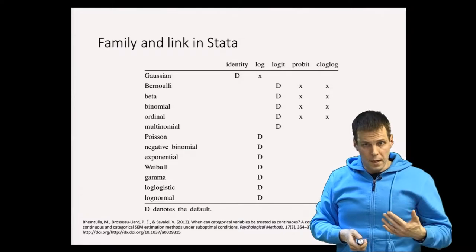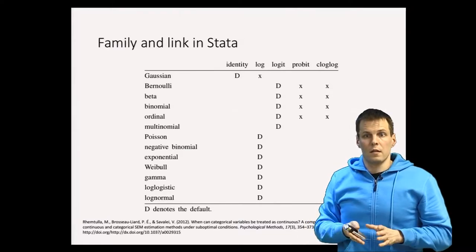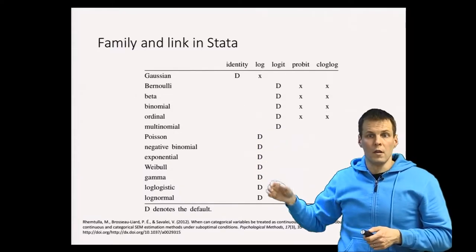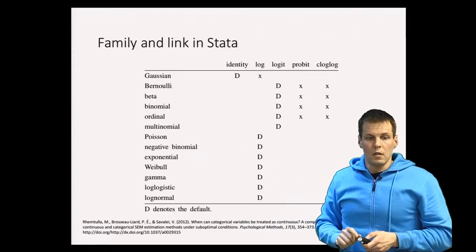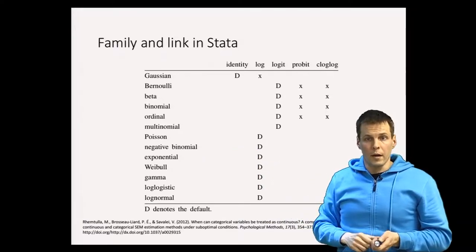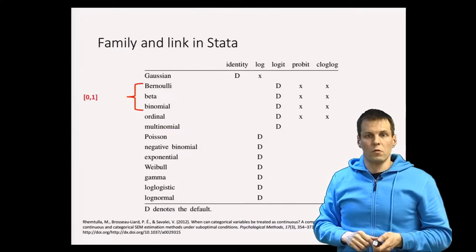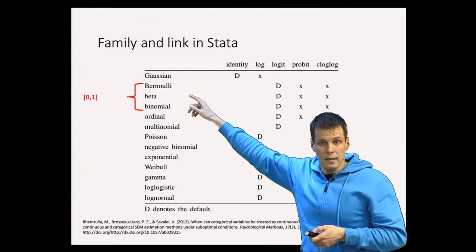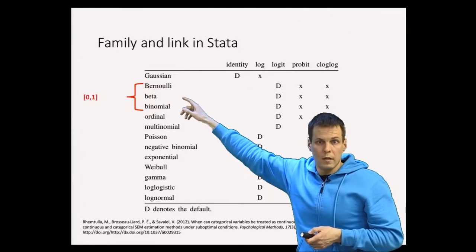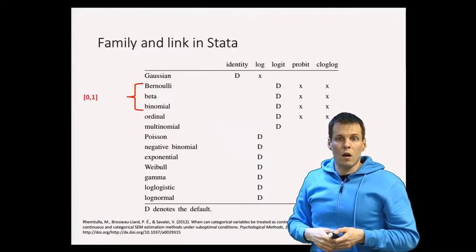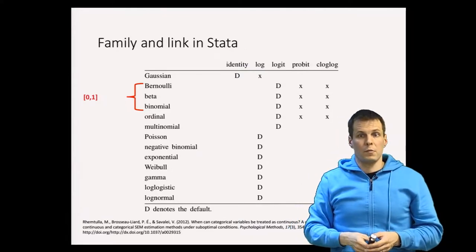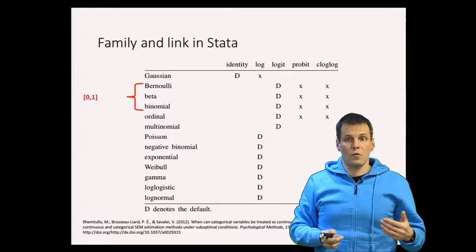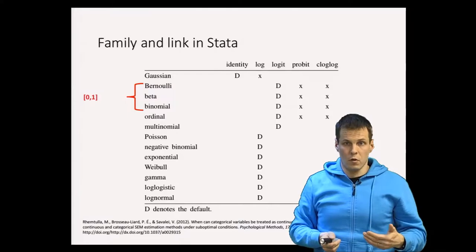A choice between 15 distributions is large, but these fall into categories. Bernoulli, Beta, and Binomial are for data that are ones, zeros, or between zero and one. Bernoulli is ones and zeros only. Beta is for values strictly between zero and one — fractions, such as what share of your time you spend working, which varies between zero and 100 percent.